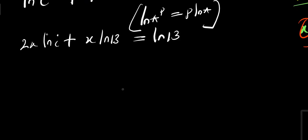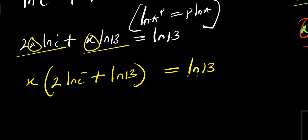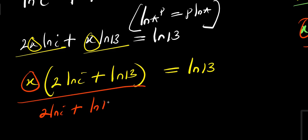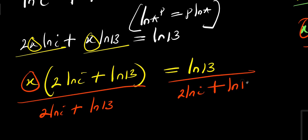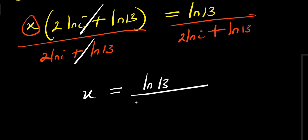There is x here and x here, so I isolate that by factoring: x times the quantity 2 times natural log i plus natural log 13, equals natural log 13. I isolate x by dividing both sides by 2 times natural log i plus natural log 13. This cancels, so x equals natural log 13 divided by 2 times natural log i plus natural log 13.